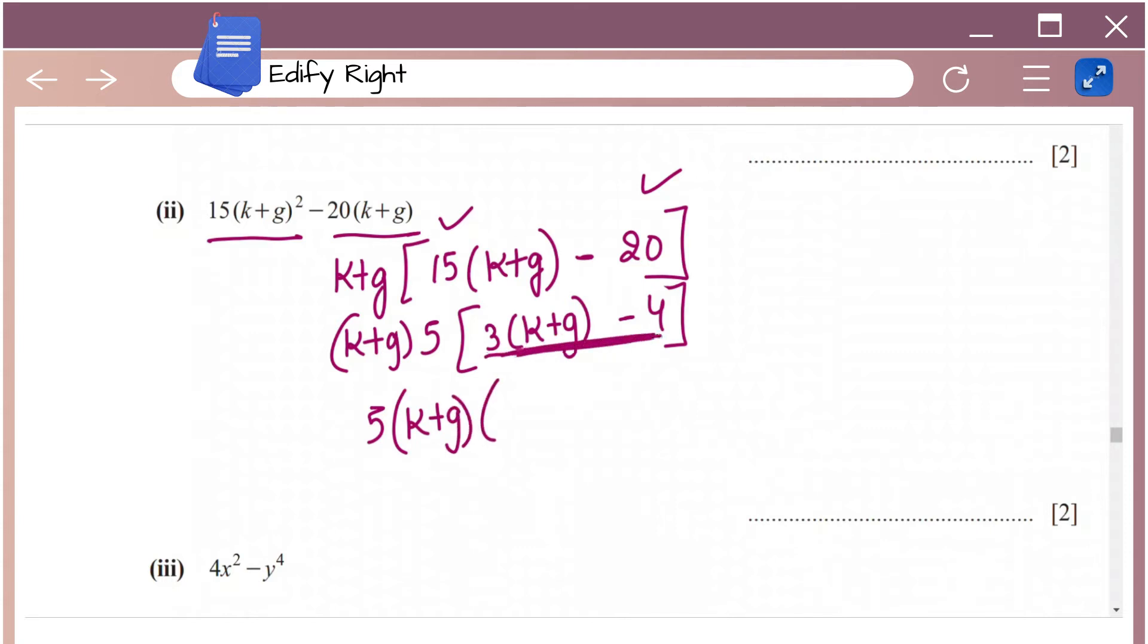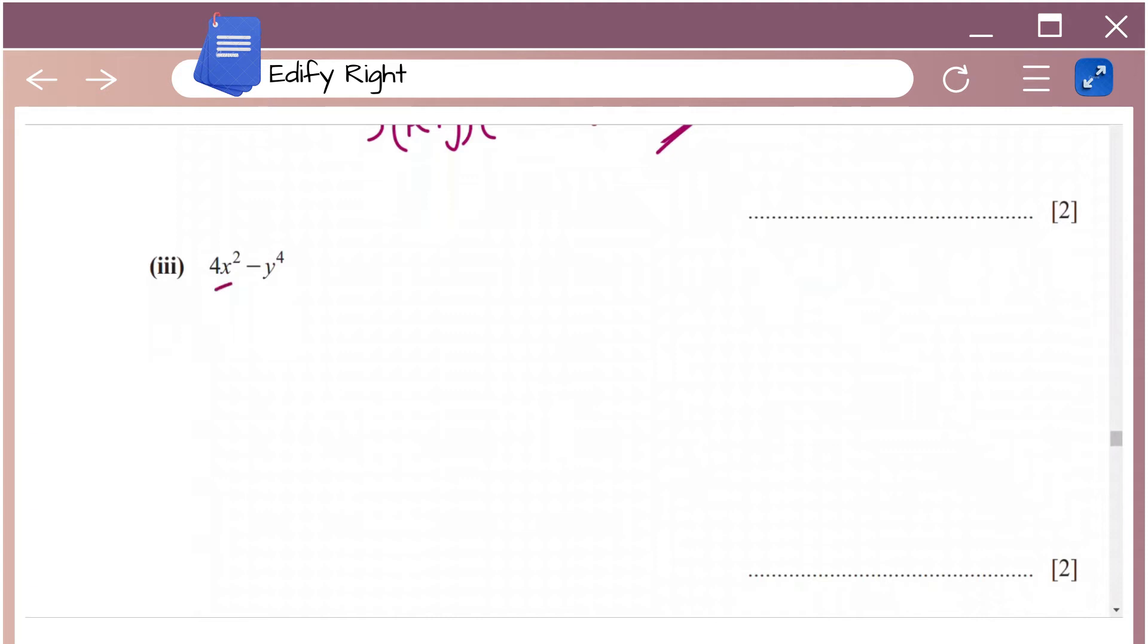Next we have 4x square minus y power 4. So we have this formula: a square minus b square equals a plus b into a minus b. And this expression is of the same form as this one.